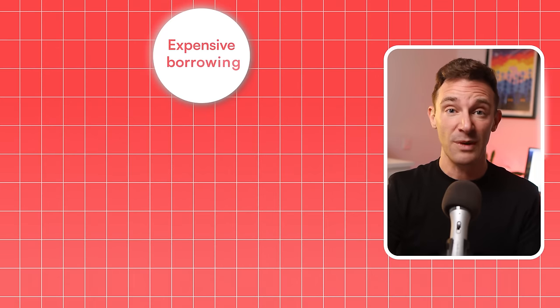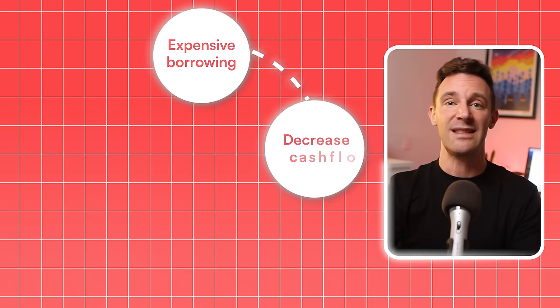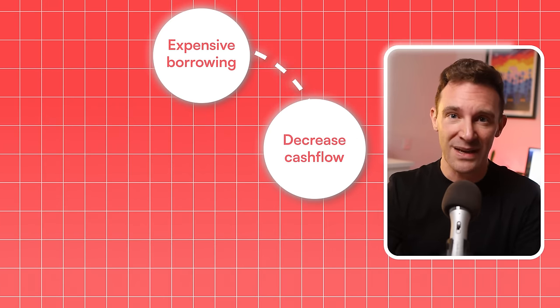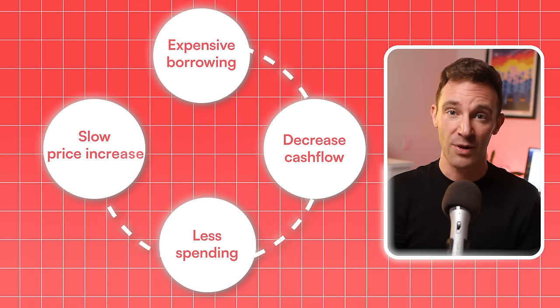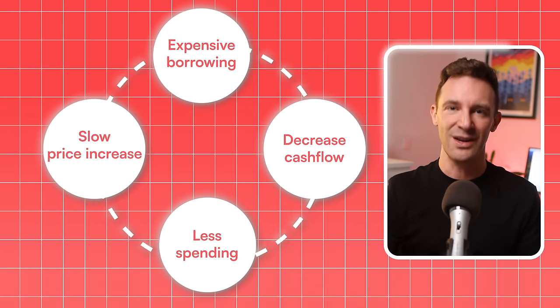You can think of it like a tap controlling the flow of money through the economy. When they turn the tap down by increasing rates, it makes borrowing more expensive and saving more attractive. The idea is that people hold on to their money rather than spending it, which means less money chasing goods and services, which slows down price increases and brings inflation under control.